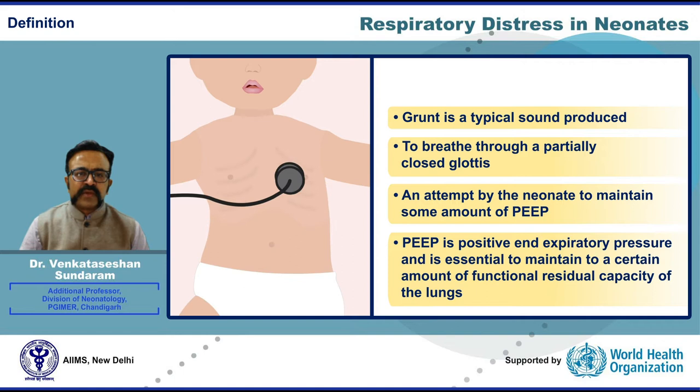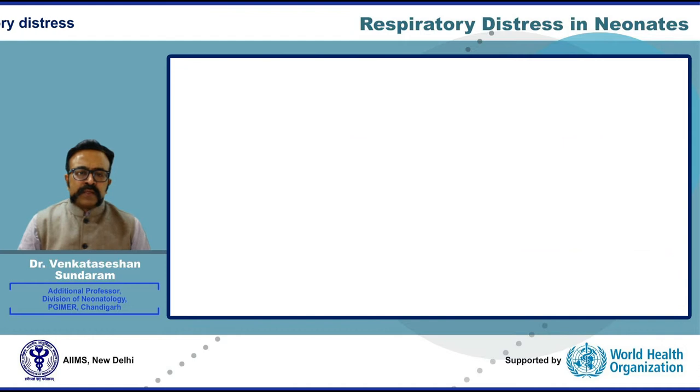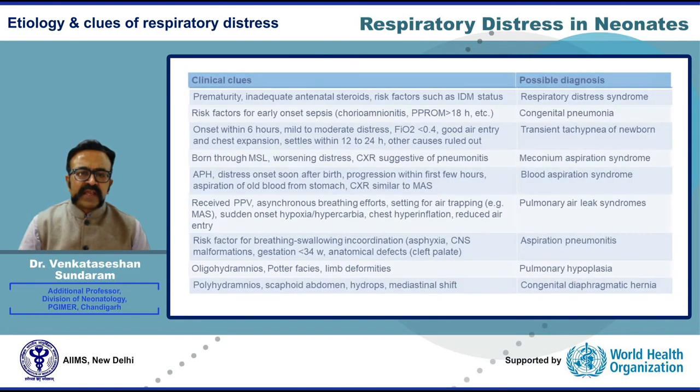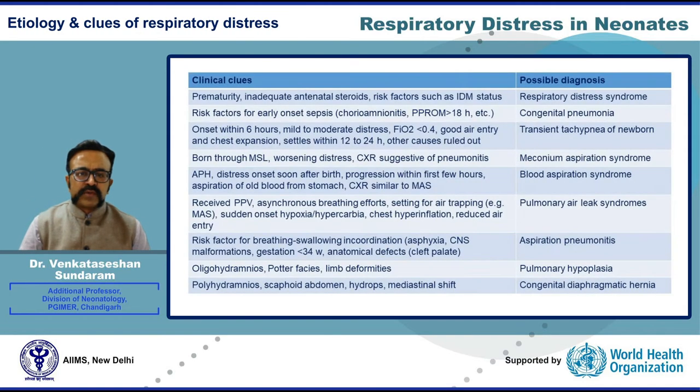Grunting is widely believed to be an attempt by the newborn to maintain some amount of PEEP — positive end-expiratory pressure — which is essential to maintain a certain amount of functional residual capacity of the lungs.